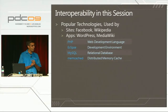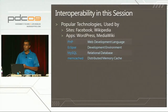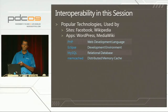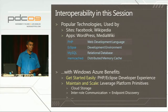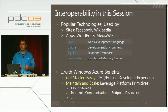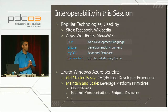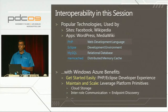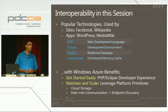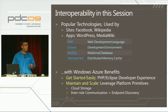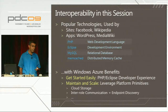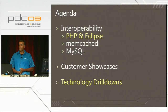PHP is a web development language. Eclipse is an integrated development environment that's popular with PHP developers. MySQL is a relational database. And finally, Memcached is a distributed memory cache. As we walk through these technologies, we'll continually reinforce two key points: first, that it is easy to get started - especially with the work we've done with PHP and Eclipse. In addition, you'll see that it's easy to maintain, scale, and enhance these applications for the cloud by leveraging new Windows Azure platform primitives, such as cloud storage, and endpoint and topology discovery.